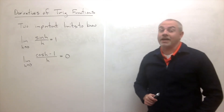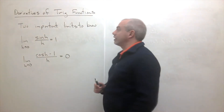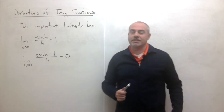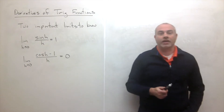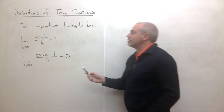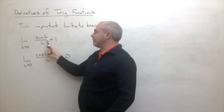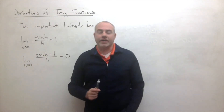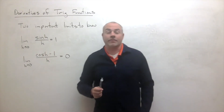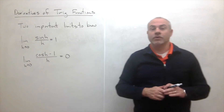Welcome back. Today I'd like to talk about derivatives of trig functions, and we're going to start with two important limits that we need to know. The first one is the limit as h goes to zero of sine of h over h, and this limit is equal to one.